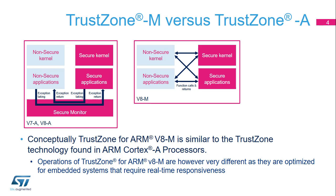TrustZone for ARMv8-M and ARMv8-A have the same objectives — supporting secure and non-secure partitions running on the same core and ensuring the protection of secure resources. However, the operations of TrustZone for ARMv8-M are very different as they are optimized for embedded systems that require real-time responsiveness. Function calls and returns are used to perform the switch between the two security worlds instead of exception taking and returning.